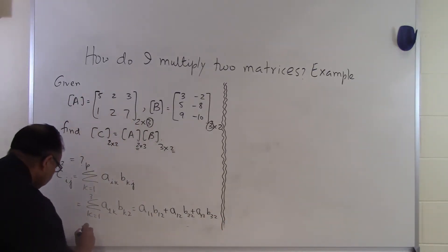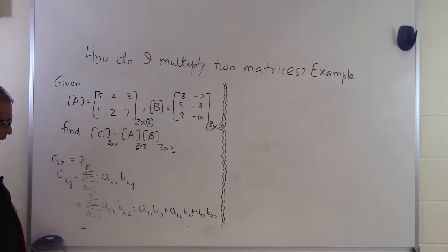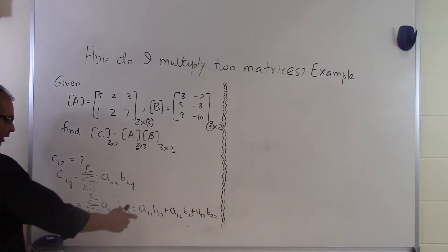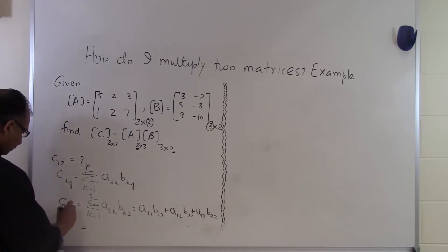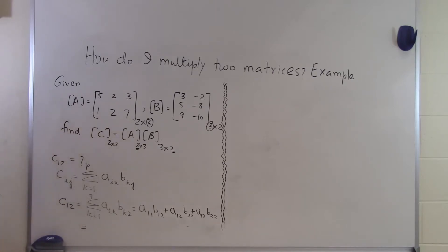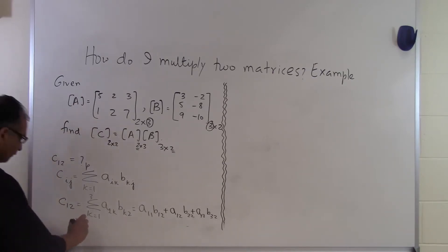So now I am going to substitute the values of the corresponding elements of A and B which I see in this summation here. And I should be able to get the value of C₁₂. So this is C₁₂. So let's see what A₁₁ is, which is 5.